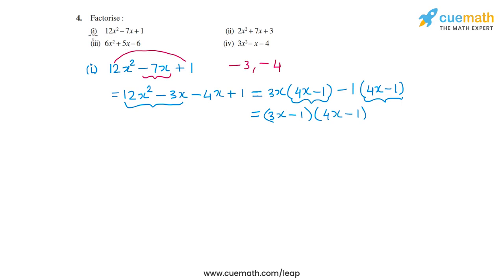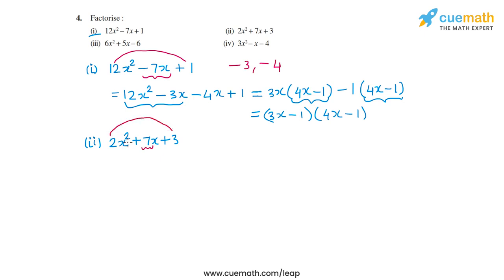Now let's go to the second polynomial, which is 2x² plus 7x plus 3. This time I have to find two numbers whose sum is equal to 7 and whose product is equal to 2 times 3, which is 6.